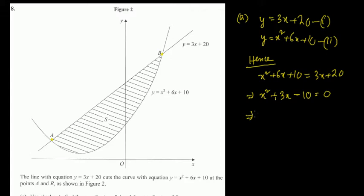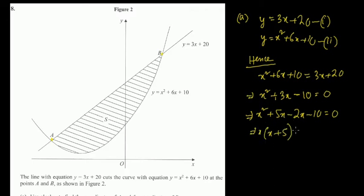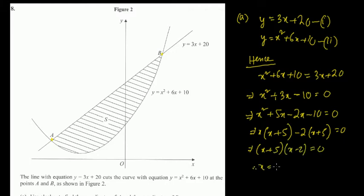Let's do middle term break. This would split as 5 and 2, so x squared plus 5x minus 2x minus 10 equals 0. Since 5 minus 2 is 3, taking x common gives x(x plus 5), and taking minus 2 common gives minus 2(x plus 5) equals 0. So we can write (x plus 5)(x minus 2) equals 0.